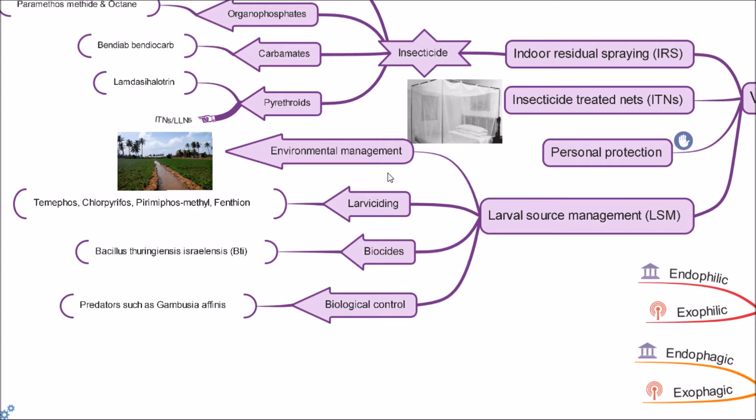The larval habitats may be destroyed by filling in or drainage of large breeding sites or by intermittent irrigation. Also, chemical larvicides can be applied in the same way as chemical insecticides.